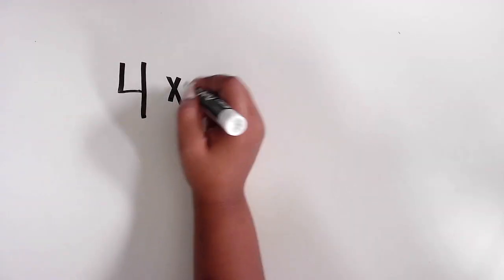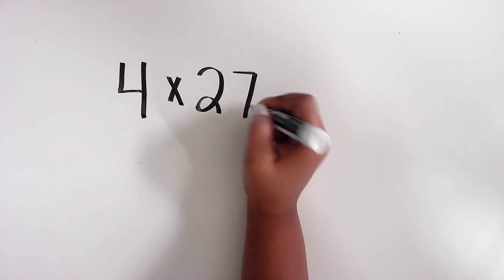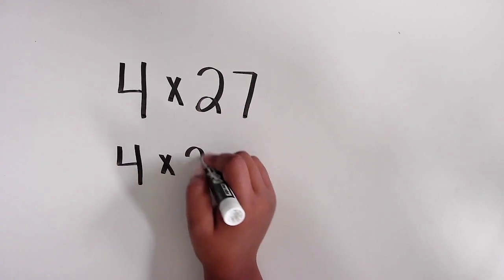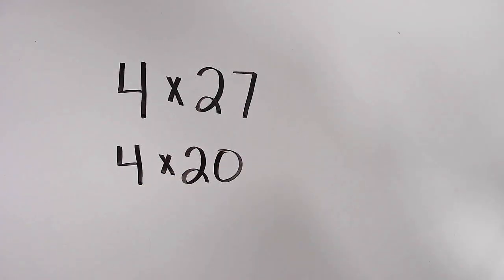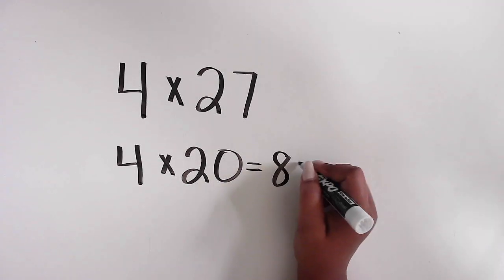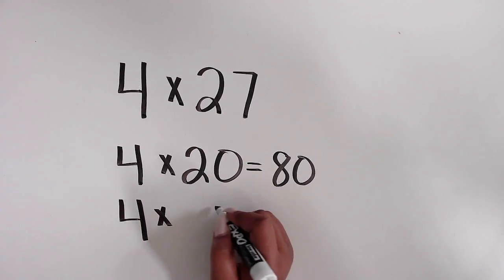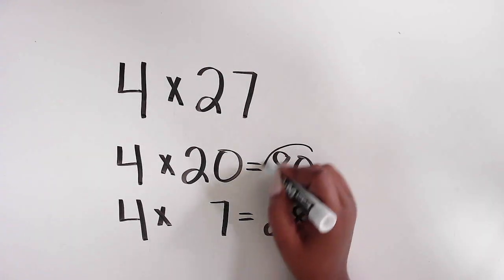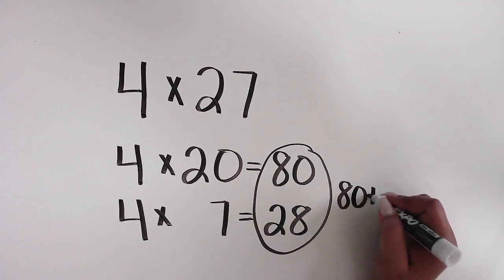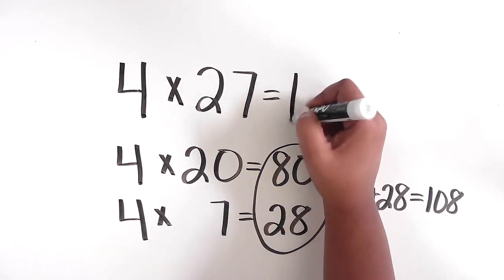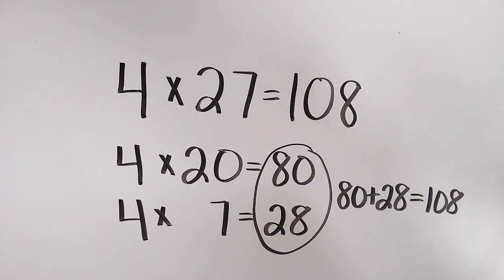Let's take, for instance, the example of 4 times 27. Think of a student who may not know how to figure out that product. I don't even know the product of 4 times 27, but I can decompose as a strategy to multiply. I can think about 4 times 20, or 4 groups of 20 — that's 80 — and 4 times 7, or 4 groups of 7, that equals 28. Then I can join those two partial products together: 80 plus 28 equals 108, so 4 times 27 equals 108. I decompose the 27 into friendlier numbers in order to multiply.